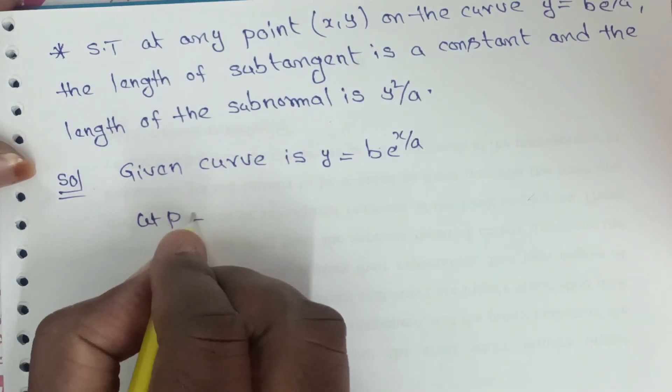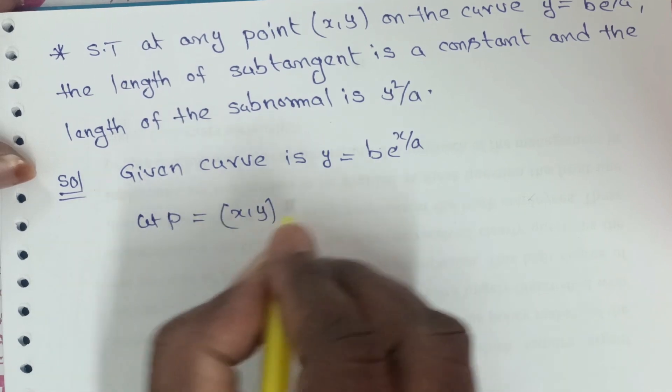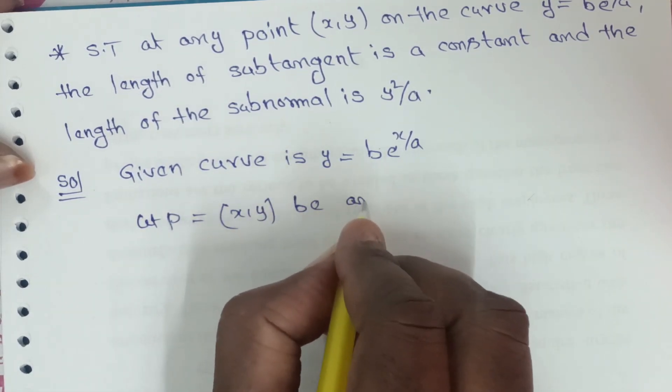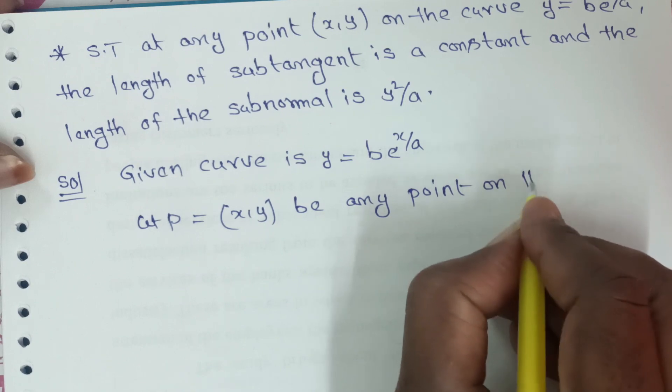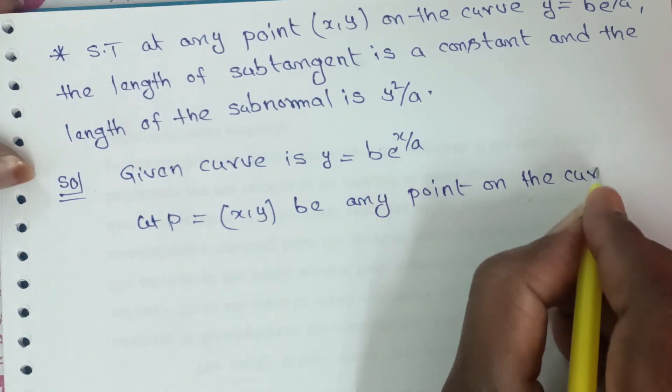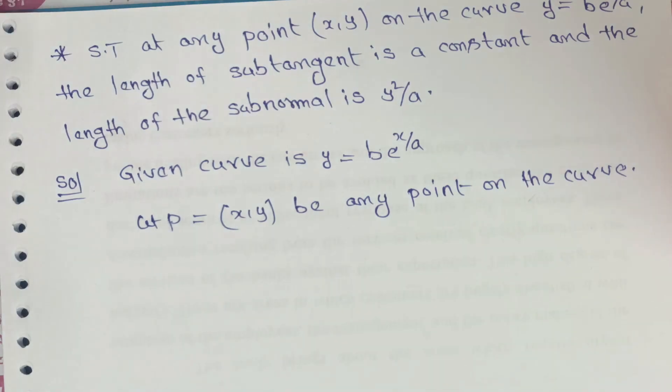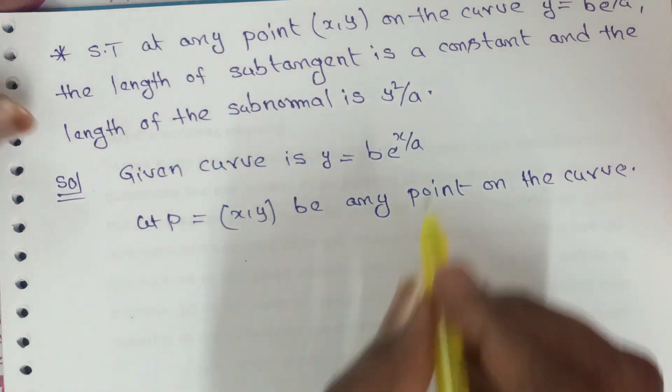Let P = (x, y) be any point on the curve. We need to prove: length of subtangent is constant, and length of subnormal is y²/a. The length of subtangent is y/y', where y' means dy/dx. This is equation number one.